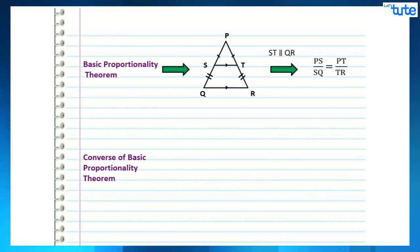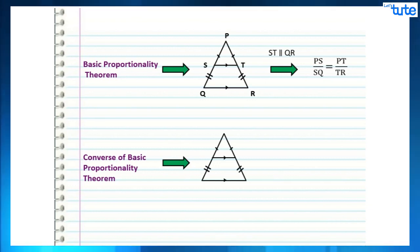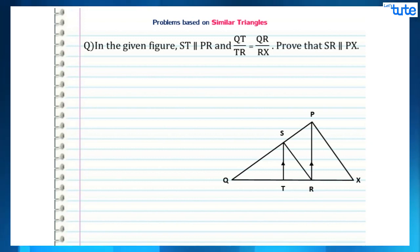to QR, then PS/SQ = PT/TR. Now the converse: it states that if a line divides any two sides of a triangle in the same ratio, then the line is parallel to the third side. For example, in triangle PQR, if PS/SQ = PT/TR, then ST is parallel to QR.